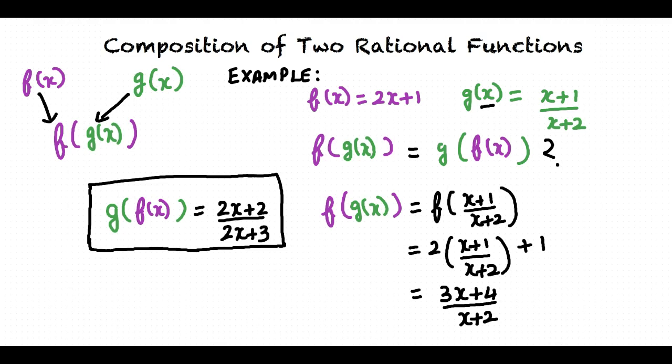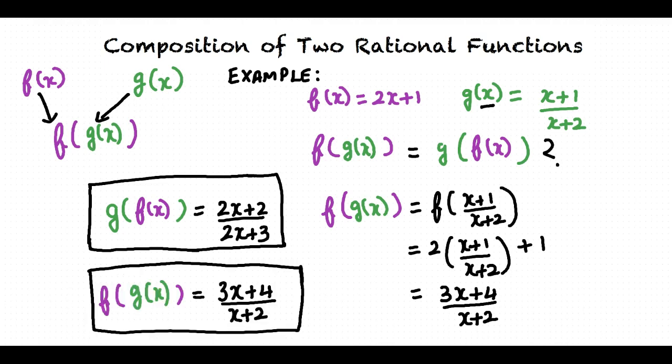Simplifying the expression, we get f of g of x equals 3x plus 4 over x plus 2. Thus, we can see that f of g of x and g of f of x need not be the same for all x values for the same two functions f of x and g of x.